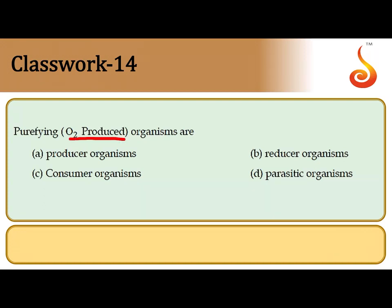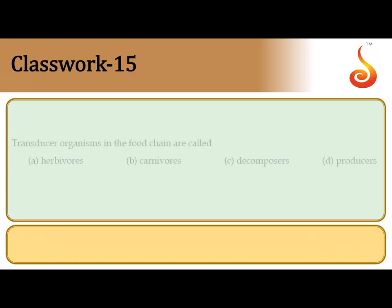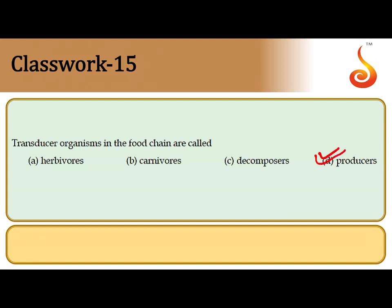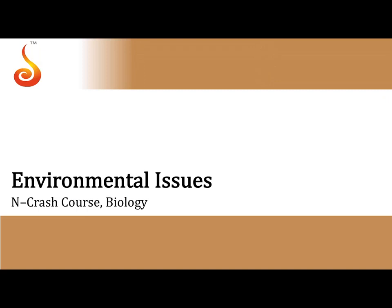The 14th question asks about purifying organisms — those which take in CO₂ and give out oxygen. These are green plants, which belong to the producer trophic level. Producers are also called transducers because they convert radiant energy from the sun into chemical energy stored as organic matter — converting one form of energy into another. So transducer organisms in the food chain are producers, making the last option correct.